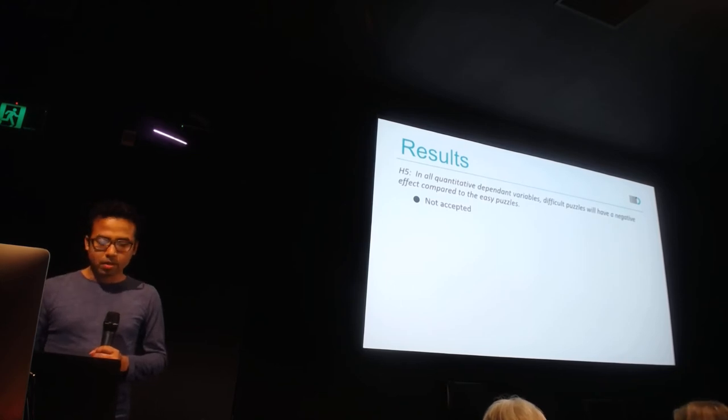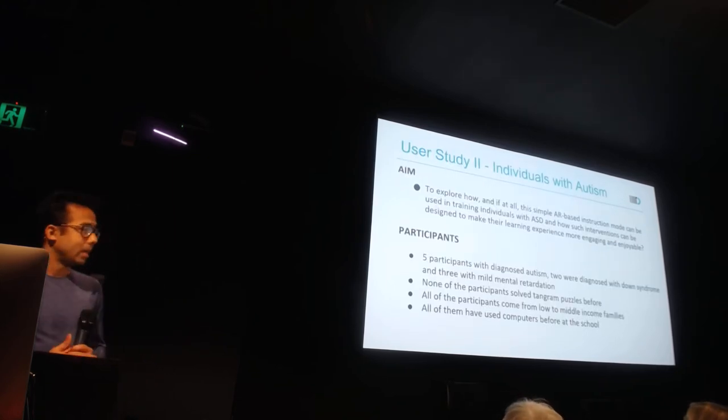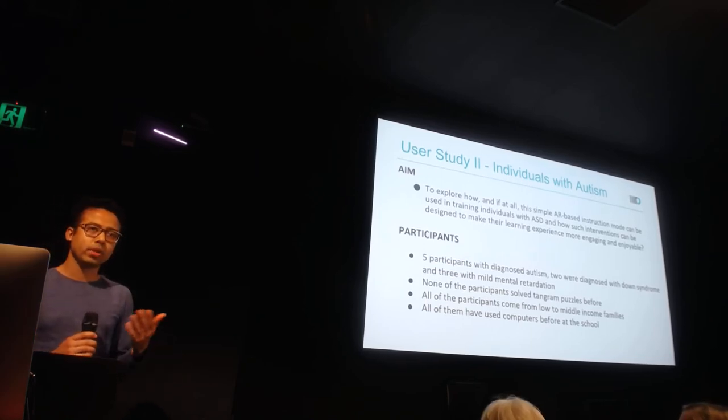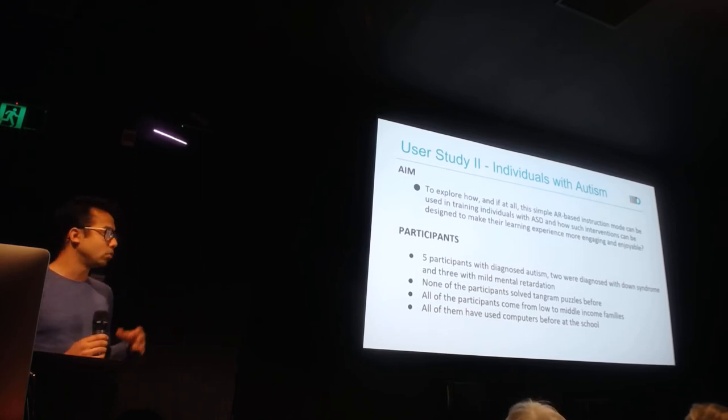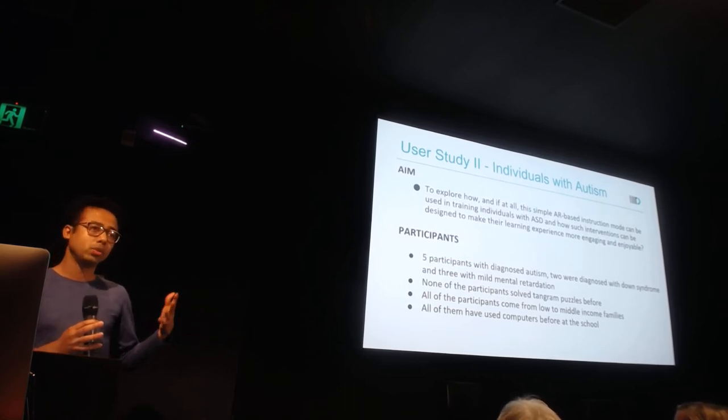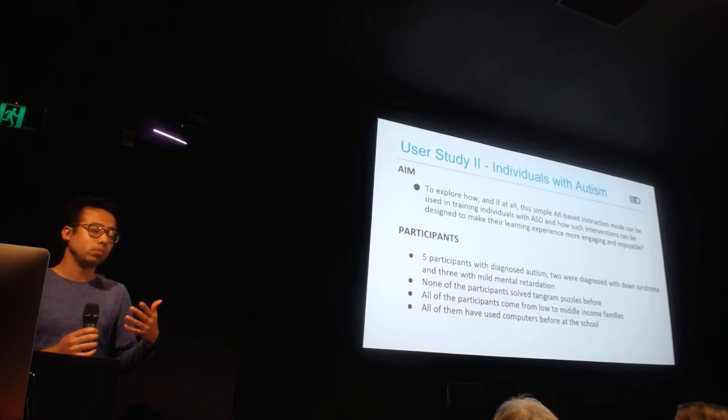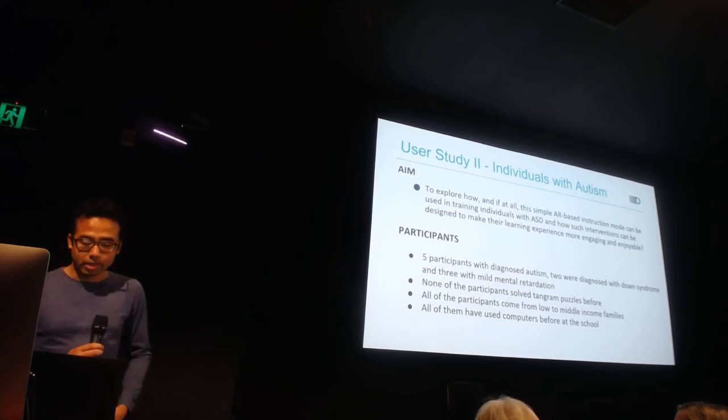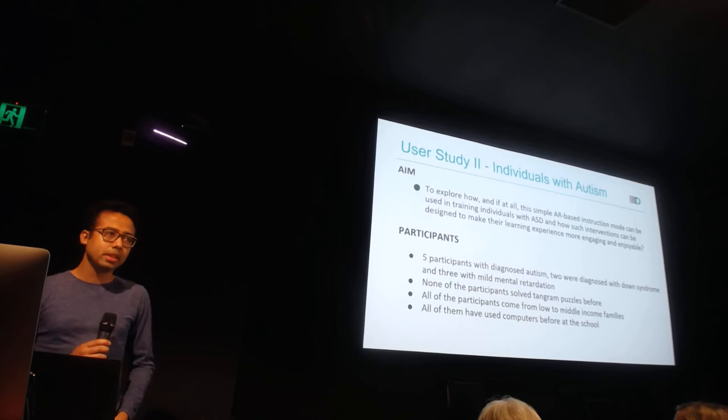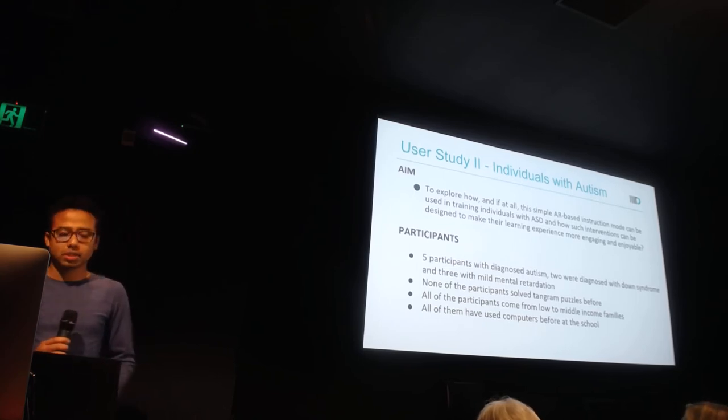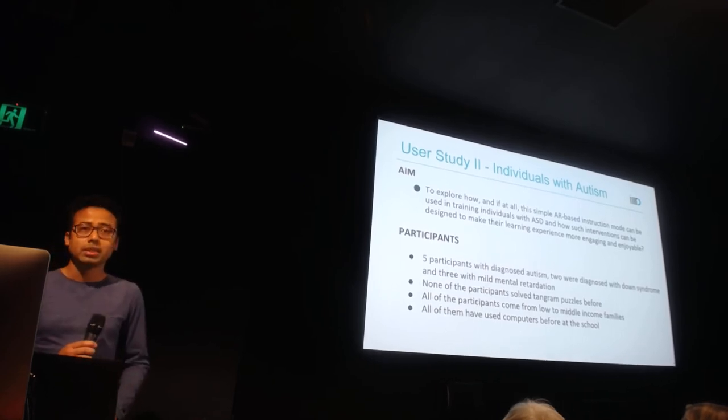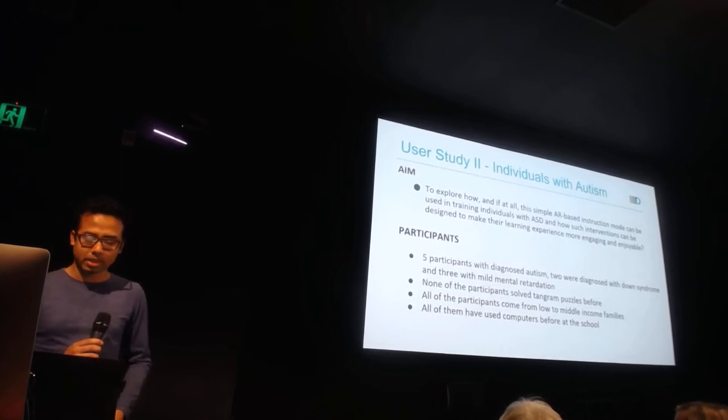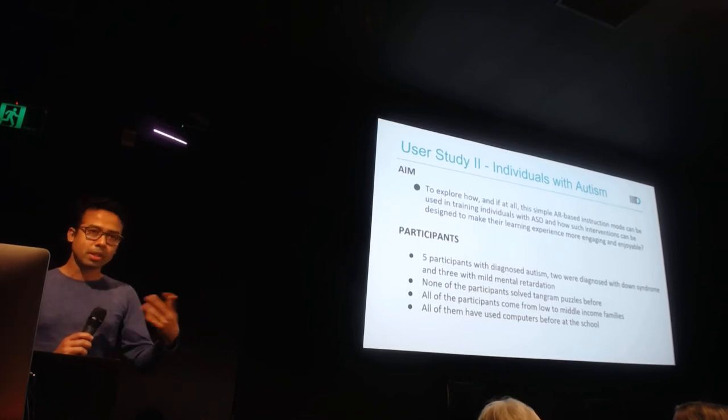After learning these lessons, we went on to a second study where we used AR-based mode with autistic individuals. We couldn't do the entire study with them but focused on finding out how they would use the AR tool, their acceptance and things like that. We recruited five participants, all diagnosed with autism. Two of them had Down syndrome and three had mild mental retardation as well.